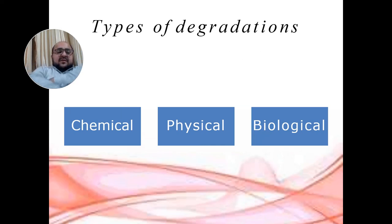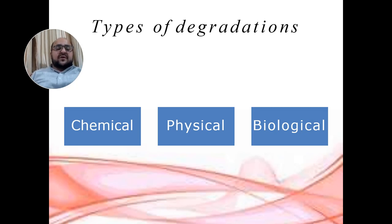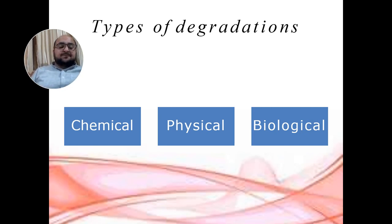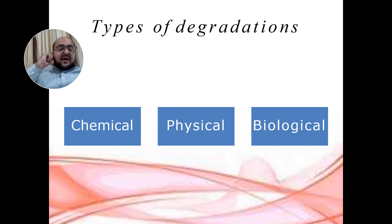Starting with the name of Allah, the most beneficent and the most merciful. Dear students, today our lecture is about the types of degradations — how drug products are degraded by different processes. These processes can be explained in the following ways: the first one is chemical degradation, the second one is physical degradation, and the third one is biological degradation.